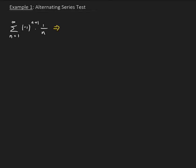So when n is 1, we're going to get minus 1 to the second power times 1 over n. So that's going to give us 1 in the first one. When n is 2, we're going to get minus 1 to the third power. That's going to give us a minus and then 1 over 2.